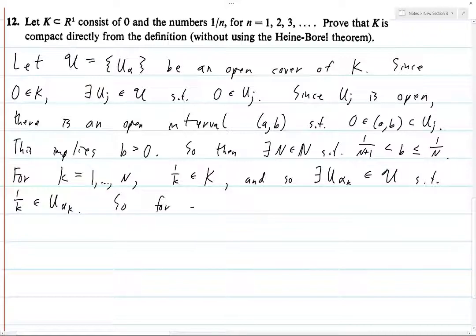So for every single point P in our set K, either P equals 0, or P equals 1 over K,